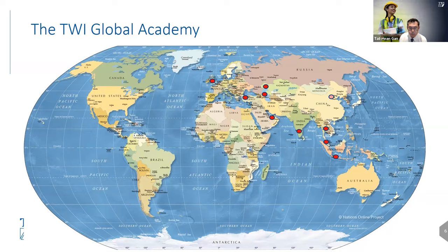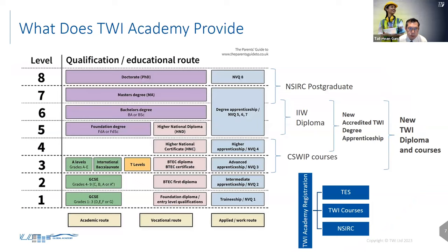To contextualise the academy, I'll link it to the UK British education system, which is split into eight levels. Our C-SWIP courses sit around Level 3 and 4 — equivalent to A-levels. The IIW Diploma sits at degree level towards Masters. Our ANSWER programme focuses on postgraduate Masters and PhDs. Going forward, we will be launching new programmes and courses sitting between Levels 3 and 6.